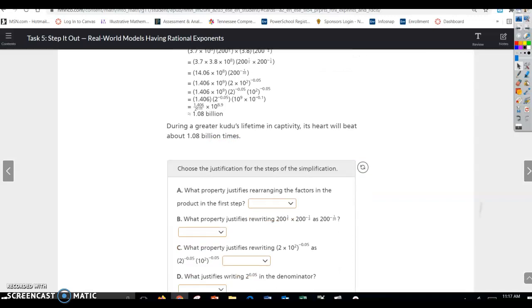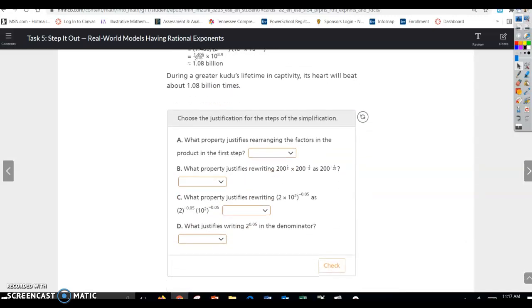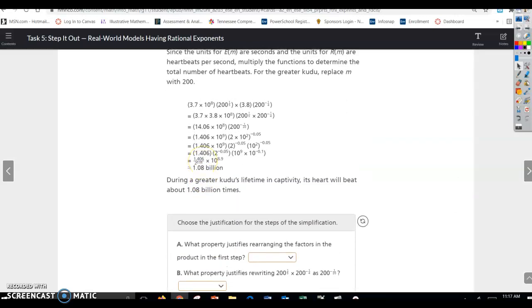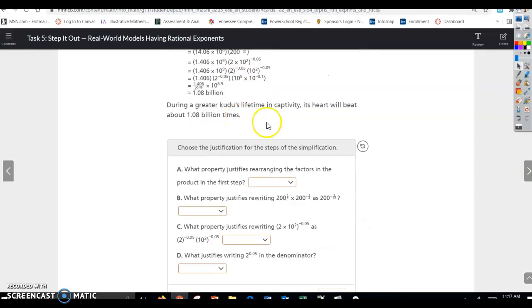Choose the justification for the steps of the simplification. What property justifies rearranging the factors in the product in the first step? So we looked at these, rearranging these, that's just associative property.